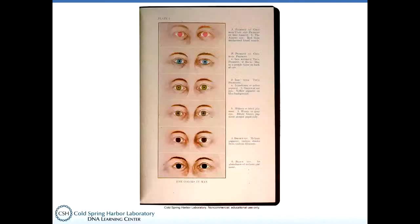We need to look back at simple genetics to understand how the ALU transposon is inherited. A classic trait studied in school is human eye color. We see a big variety of eyes between different human beings, and the idea that eye color is genetically determined was figured out here at Cold Spring Harbor by Charles Davenport in about 1908.